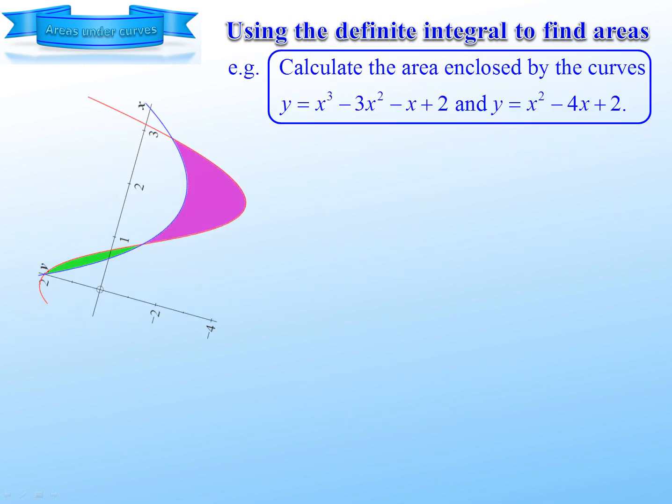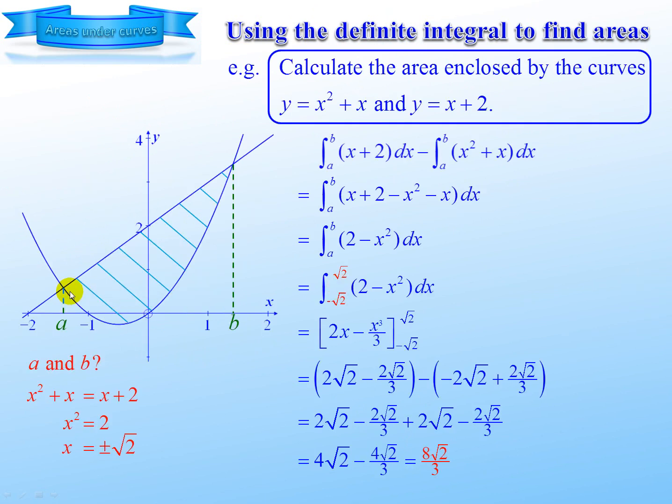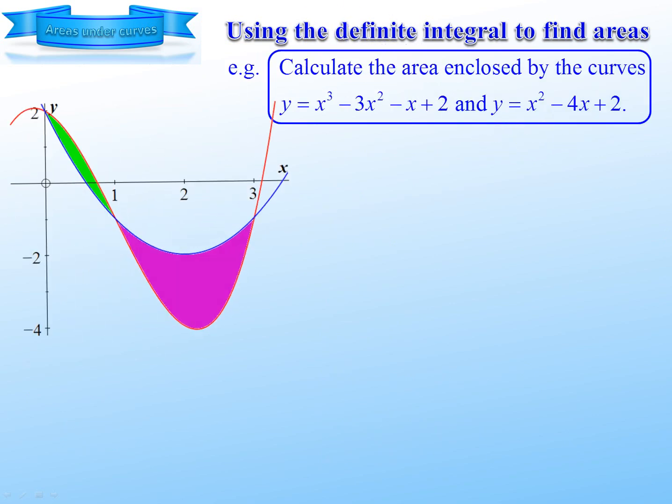Now we have the area enclosed by two curves. Where the difference is, notice the previous one, it's a single area there. One function is always above the other one. But in this next one, they cross over during the area. So we can't just say the cubic subtract the parabola, because the cubic isn't always above. So we're going to have to divide it into two areas.